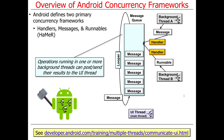Likewise, a background thread can send a message via a Handler associated with a message queue in the UI thread; the Looper pulls the message out and dispatches it via handleMessage in the context of the UI thread. Importantly, both runnables and messages are treated as messages internally by the Android framework — runnables have a little extra glue code to handle them by calling their run method. As an application developer, you interact directly with messages or runnables, Handlers, threads — while the Looper and message queue are somewhat hidden from you.